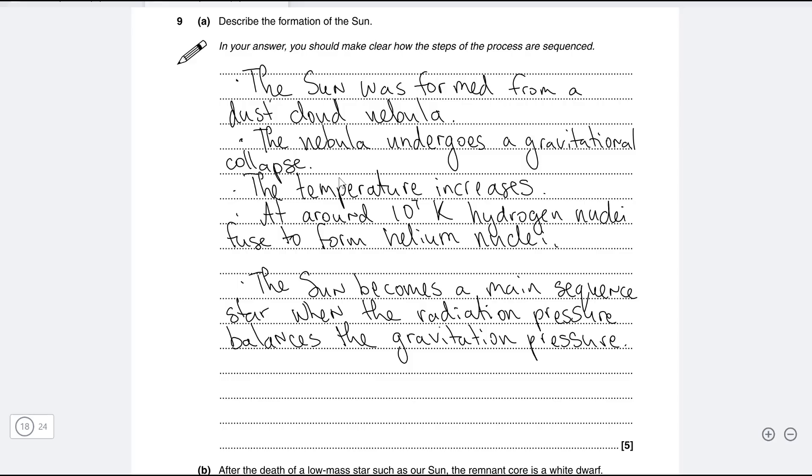As the star or as the nebula is undergoing gravitational collapse, gravitational potential energy is getting converted to kinetic energy and hence the temperature increases. At around 10 million kelvin or around 10 to the power of 7 kelvin, hydrogen nuclei fuse to form helium nuclei.